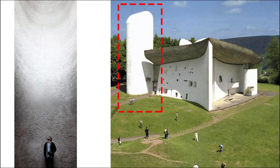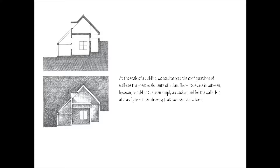When we draw these spaces, especially in section, we can poche the earth, walls, floor, and roof and leave the space white. Or we can invert that, leaving the enclosure white and rendering the light inside the space. So if space is the invisible area inside the enclosure, then form is the opposite — form is the physical thing we can see: the walls, the floor, the roof, the physical shape the project takes.